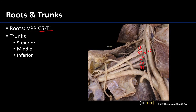Moving distally, we get to the trunks. Fibers from C5 and C6 combine to form the superior trunk. The C7 root continues on its own to form the middle trunk. Then the roots of C8 and T1 combine to form the inferior trunk. These are very well named: superior is the most superior, middle is in between, and inferior is the most inferior.